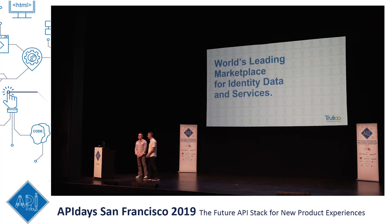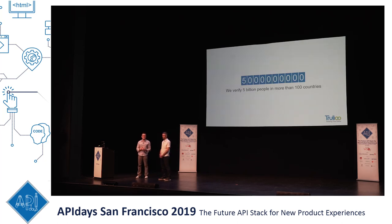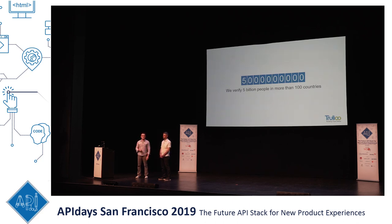Trulio is a global identity verification company. We verify people through a data marketplace. We've integrated over 400 different databases of individual information across over 100 different countries. With this massive trove of data sources, we're able to verify 5 billion people through one API, all in real time, across over 100 different data sources — including everything from credit bureaus to carrier networks to public records — anything with consumer consent that helps you verify individuals you're onboarding.